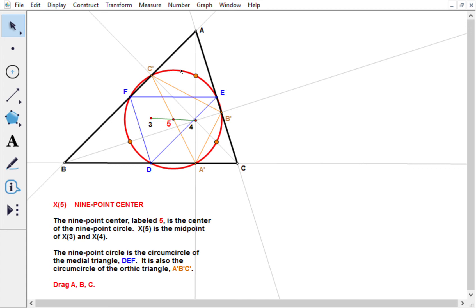Therefore, it's called the nine-point circle. And its center is the nine-point center, X5, which remarkably is halfway between the orthocenter and circumcenter on the Euler line.